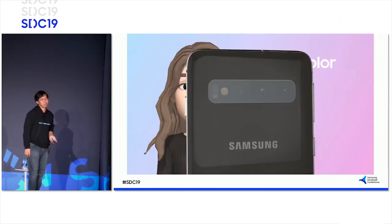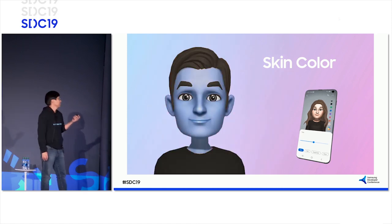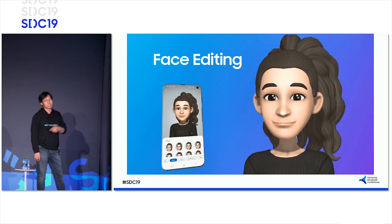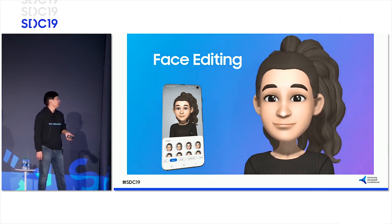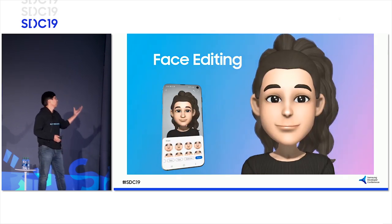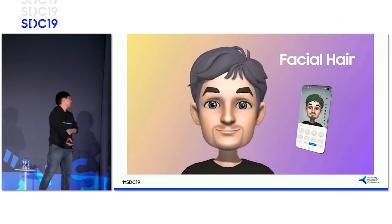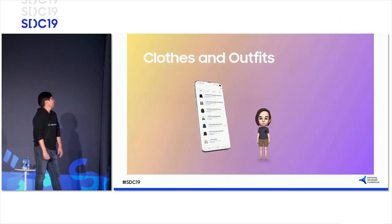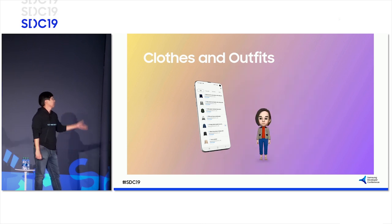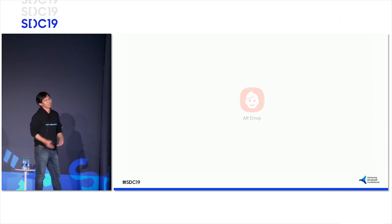So I'm introducing the AI Emoji application. This AI Emoji was introduced with the S9 and redesigned with the S10. We already have a sophisticated customization feature including face editing, skin color changes, and changing the hairstyle. We can also apply various kinds of assets like clothes and outfits, et cetera. We're making more assets, and those assets can be downloaded from the Galaxy Store.